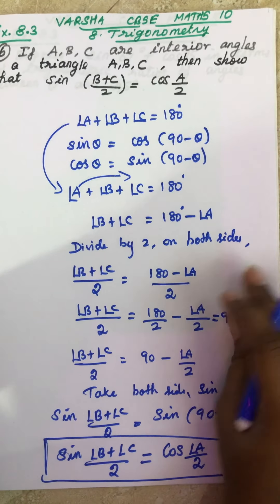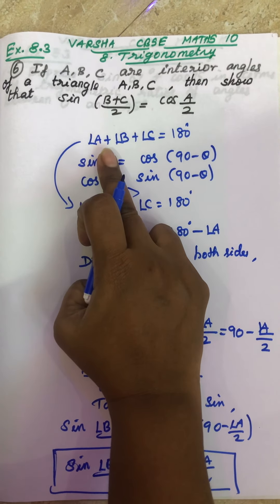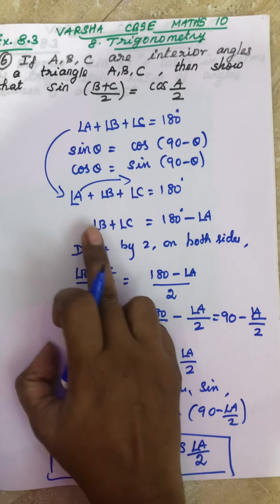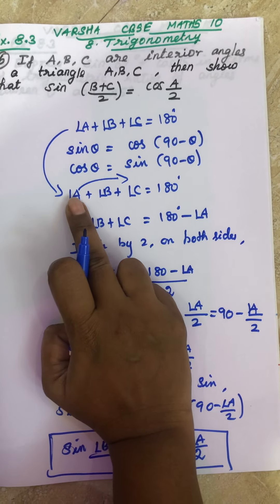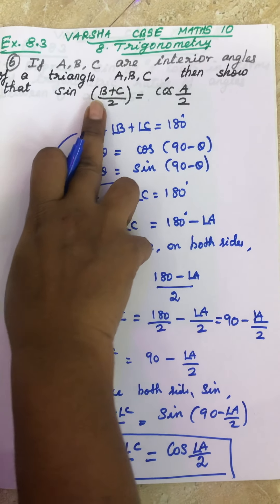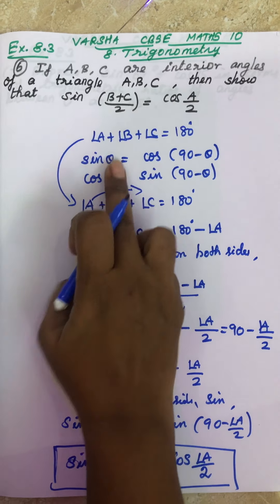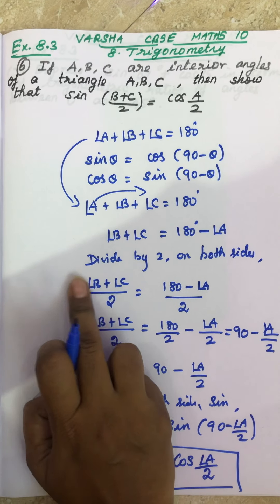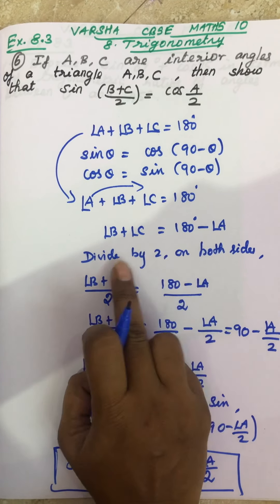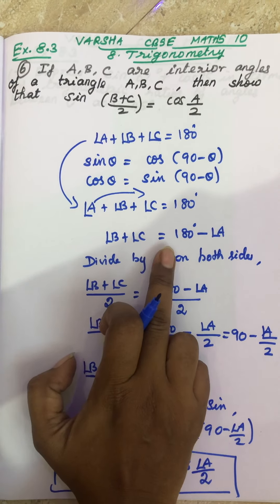Let me explain one more time. First, by the property of a triangle, the sum of the three angles is 180°. Because B plus C is on the left-hand side, send A to the other side. It goes as minus A, so B plus C equals 180 minus A.